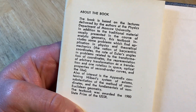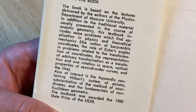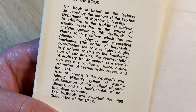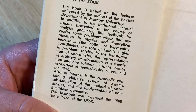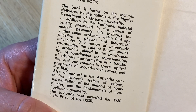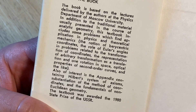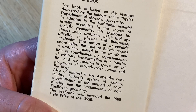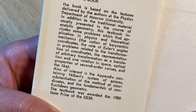Here it talks a little bit about the book. This book is based on the lectures delivered by the authors at the Physics Department of Moscow University. In addition to the traditional material usually presented in the course of analytic geometry, this textbook includes some problems which find application in physics and theoretical mechanics, the notion of barycentric coordinates, the role of Euler's angles and problems related to the transformation of coordinates, the representation of arbitrary transformation as a translation and one rotation in space, optical properties of second-order curves, and the like.